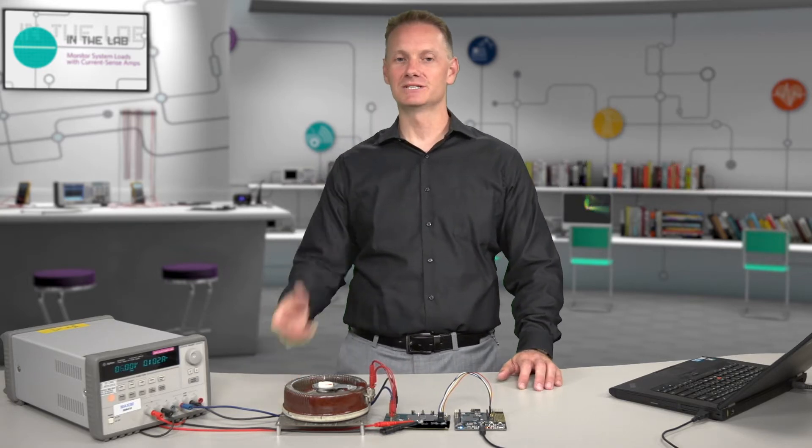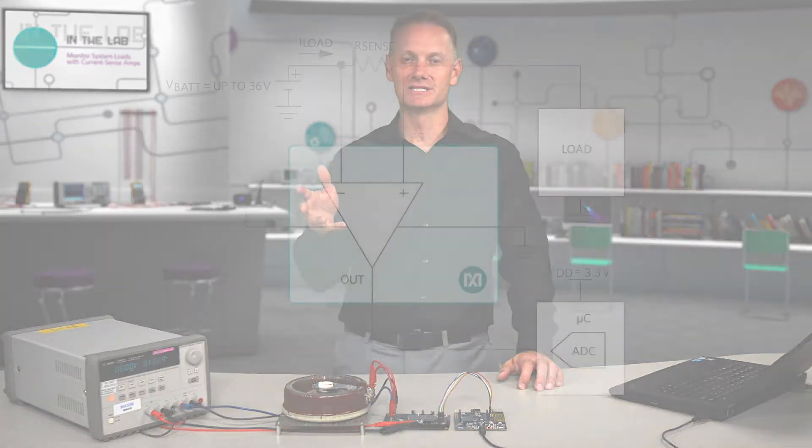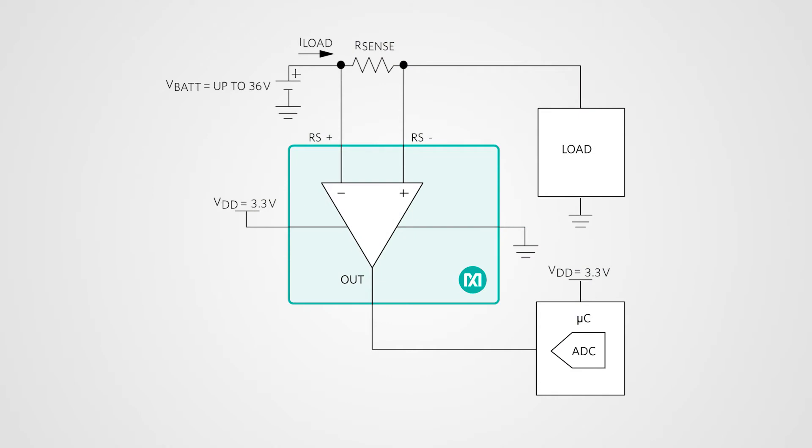In a CurrentSense amp you've got your typical load and as you can see in this drawing here you've got the voltage in the top left corner. It's feeding a sense resistor into the CurrentSense amp which then the current draw goes into the load. With the output of the CurrentSense amp it's going to feed into an analog-to-digital converter. Now typically that's going to be an ADC inside a microcontroller.